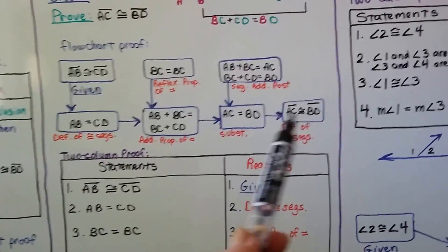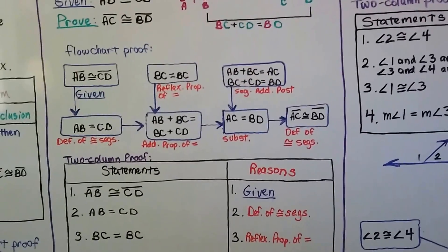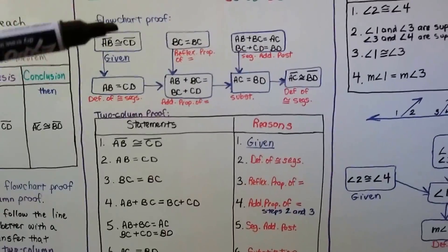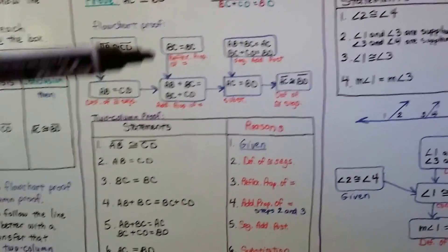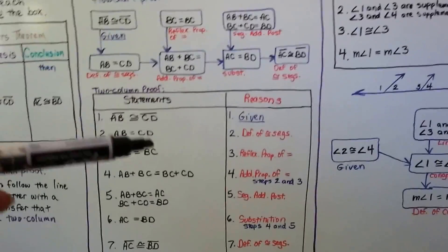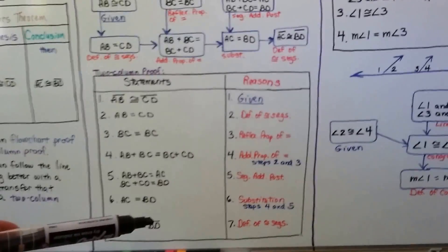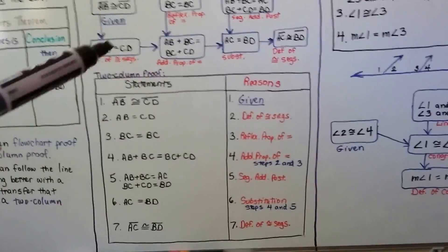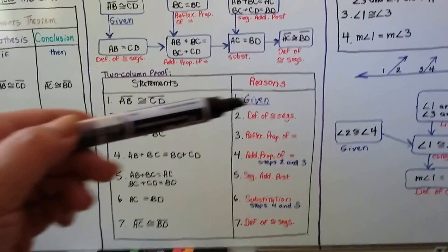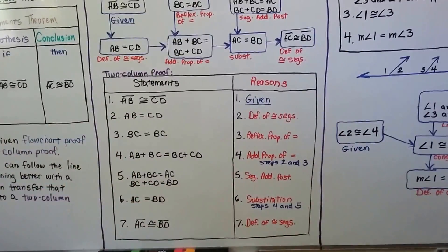We're going to move to the right. This box is directly related to this one. If AB plus BC equals AB plus BC, and AB plus BC equals AC, and BC plus CD equals BD — and we know these two are equal to each other — then AC must equal BD. That's substitution. That brings us to our definition of congruent segments — our proof that segment AC is congruent to BD.